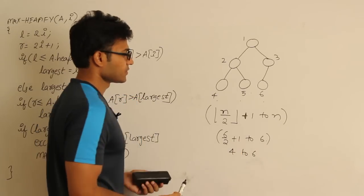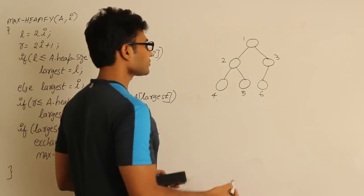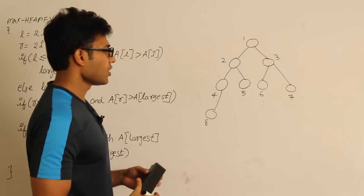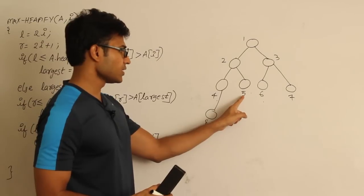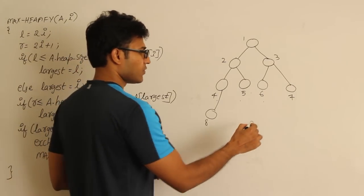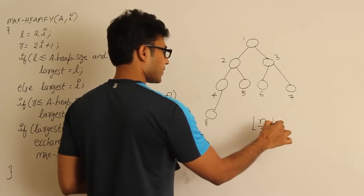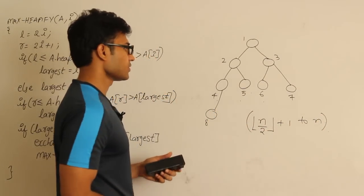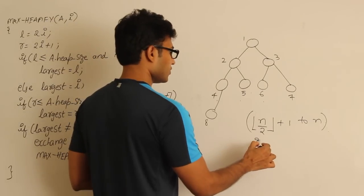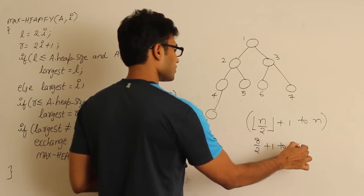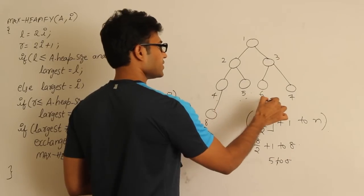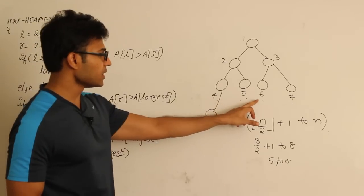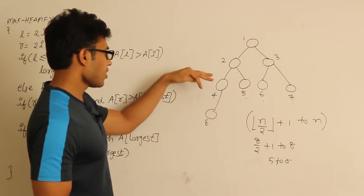With n = 8 nodes: floor(8/2) + 1 = 5, so leaves are indices 5, 6, 7, and 8; indices 1 through 4 are non-leaves. Remember: all nodes from floor(n/2) + 1 to n are leaves, and all remaining nodes are non-leaves. We are interested in finding leaves because every leaf is a tree with one node, and every single-node tree is trivially a max heap.